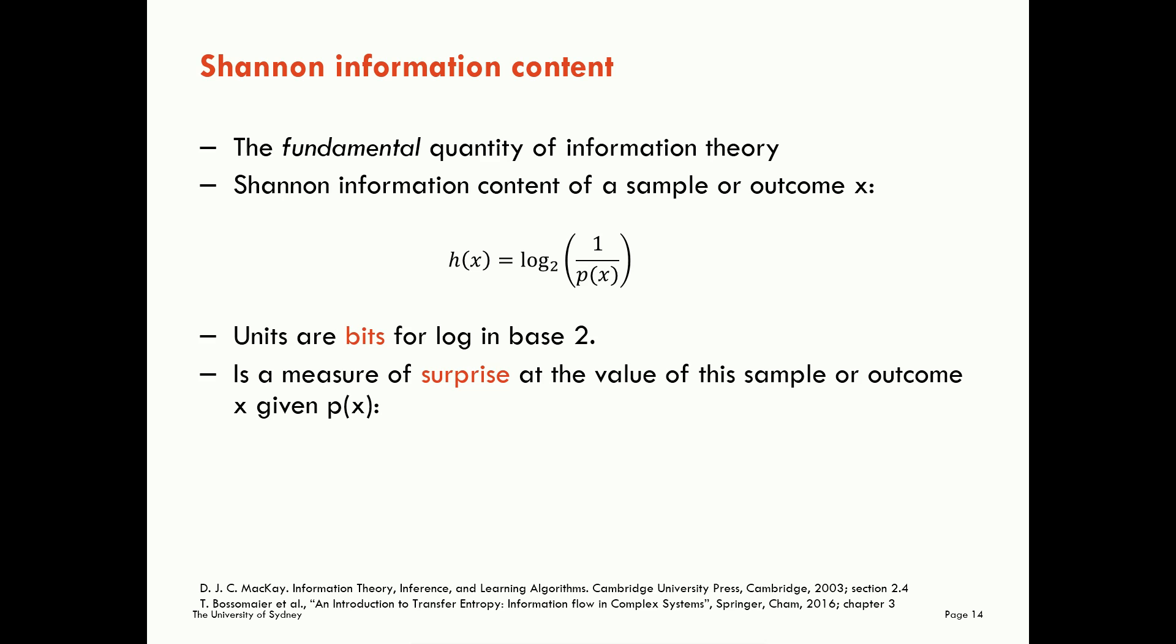But what is the Shannon information content? It's a measure of surprise that we have at the value of this sample or outcome. So when we see, when we read the outcome that we got this time, how surprised are we about that outcome? So the information content is a measure of surprise at this value or outcome. Our surprise is always greater than or equal to zero. We can't be negatively surprised. We can have zero surprise if we get the same value all the time. We have no surprise when we see it. And we can actually be surprised if it's something we're not sure if we're going to see or not.